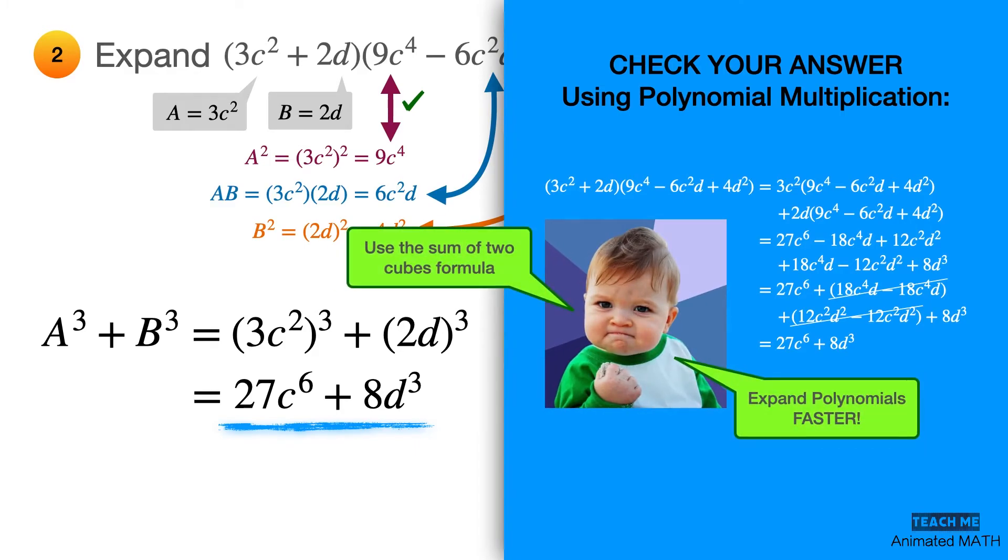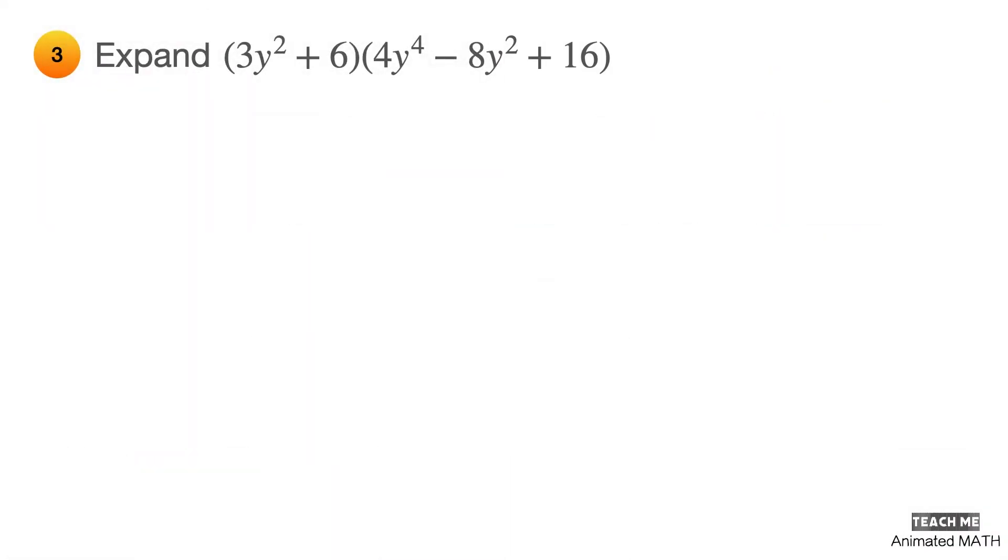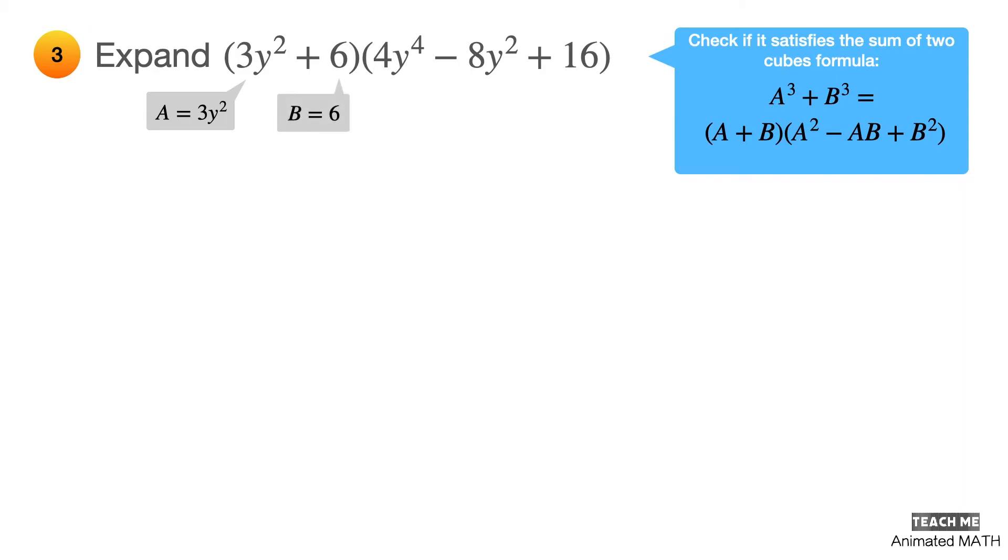So, for the last example, we'll try something a little bit tricky. Assume that a is equal to 3y squared and b is equal to 6. Using these values for computation, a squared is equal to 9y raised to 4, ab is equal to 18y squared, and b squared is equal to 36. Hmm, but it's strange though.